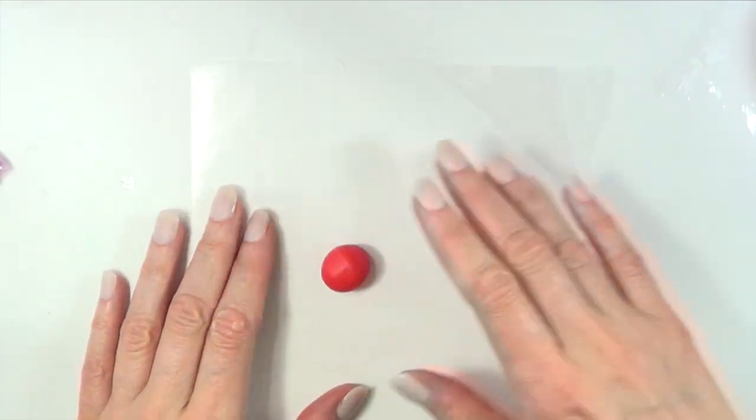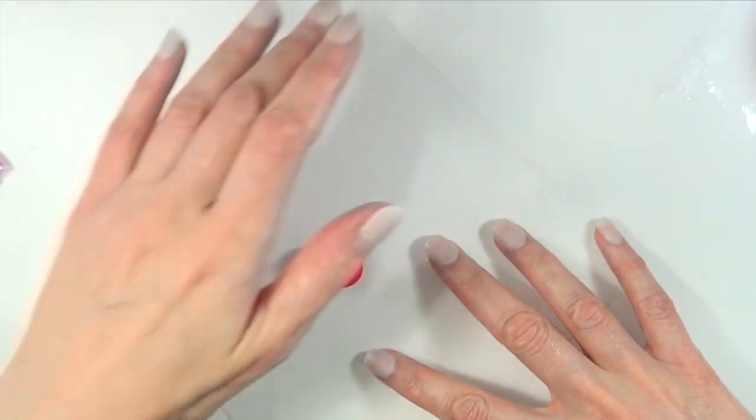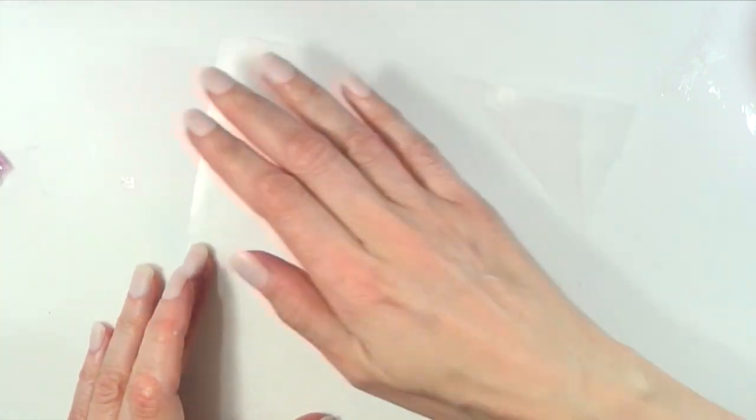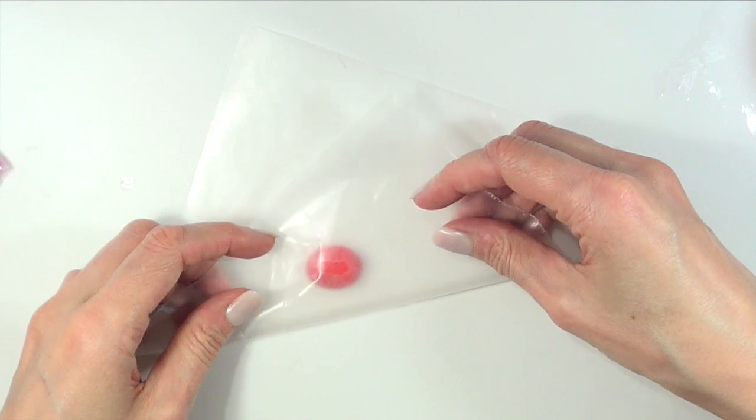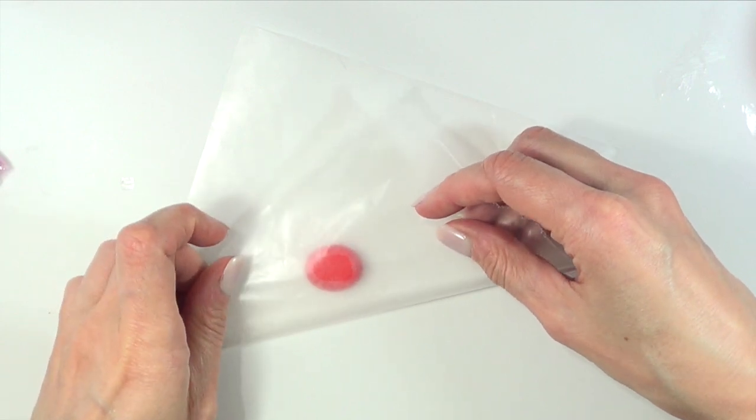Now we're going to be making some ladybugs. For that, I'm going to be taking some red fondant colored with red food coloring. I'm just going to be making this shape, first round and then just oval shape in between my two hands. Then I'm going to be pushing this a bit with my wax paper just so it's flat like ladybugs are.